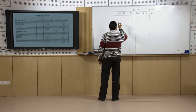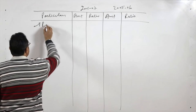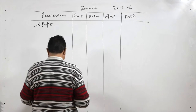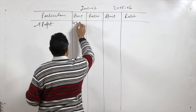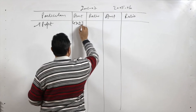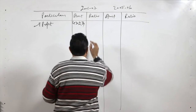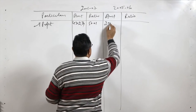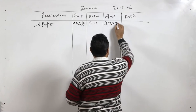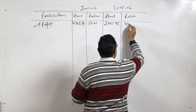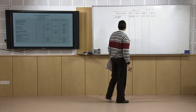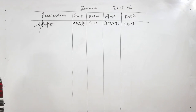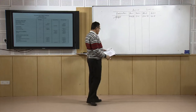Continuing from the previous statement, the gross profit for the current year is 4302.34 crores with a ratio of 50.01 percent, and for the previous year it is 2965.95 crores with a ratio of 44.58 percent. After this gross profit ratio we will be calculating the other ratios.